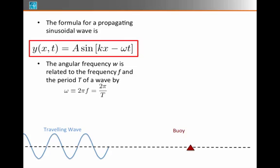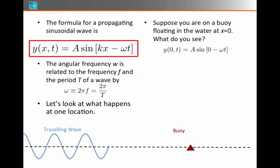Angular frequency omega is related to the frequency f and the period T of a wave by the expression omega equals 2 pi times the frequency, or 2 pi over the period.